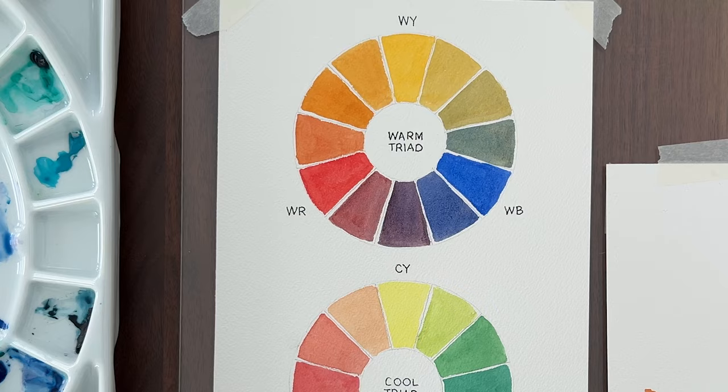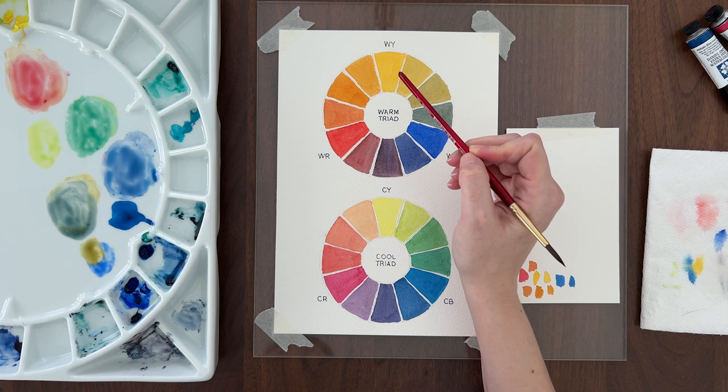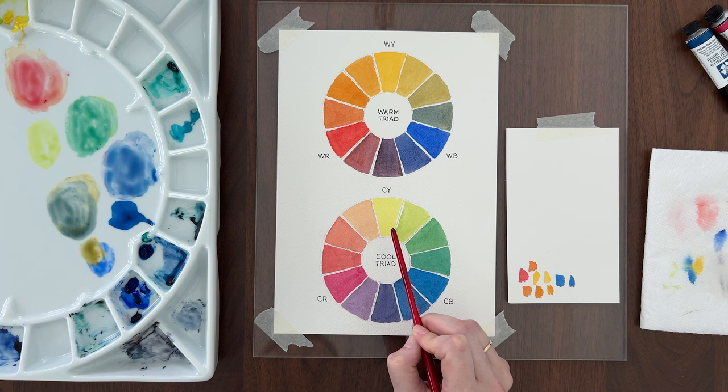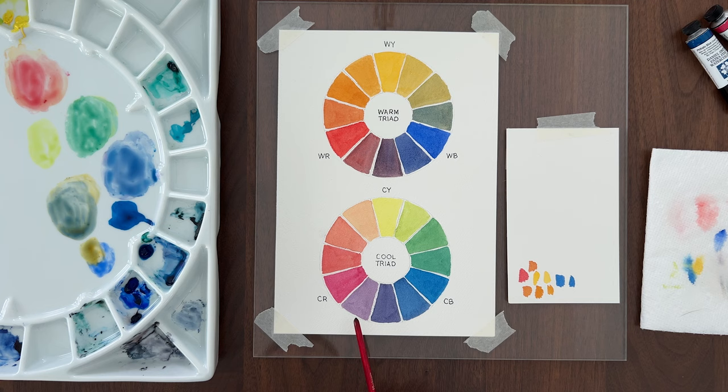What is most important to notice about these two color wheels is where you get the cleanest, most saturated colors. On the warm triad, you get beautiful oranges mixed from warm red and warm yellow. On the cool triad, you get beautiful bright greens mixed from cool yellow and cool blue. Neither of these triads makes good purples, but I'll show you how to get gorgeous purples in a moment.